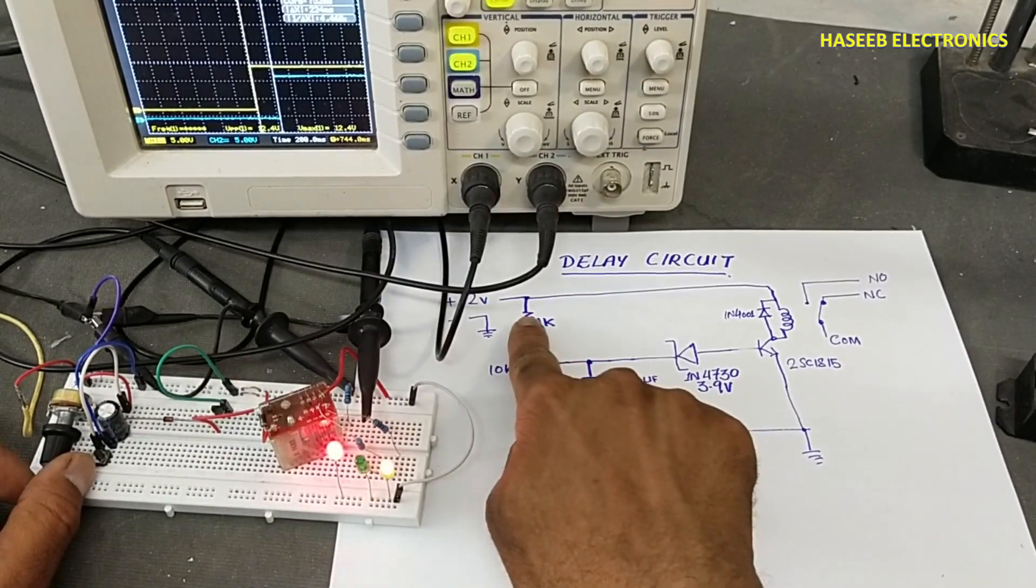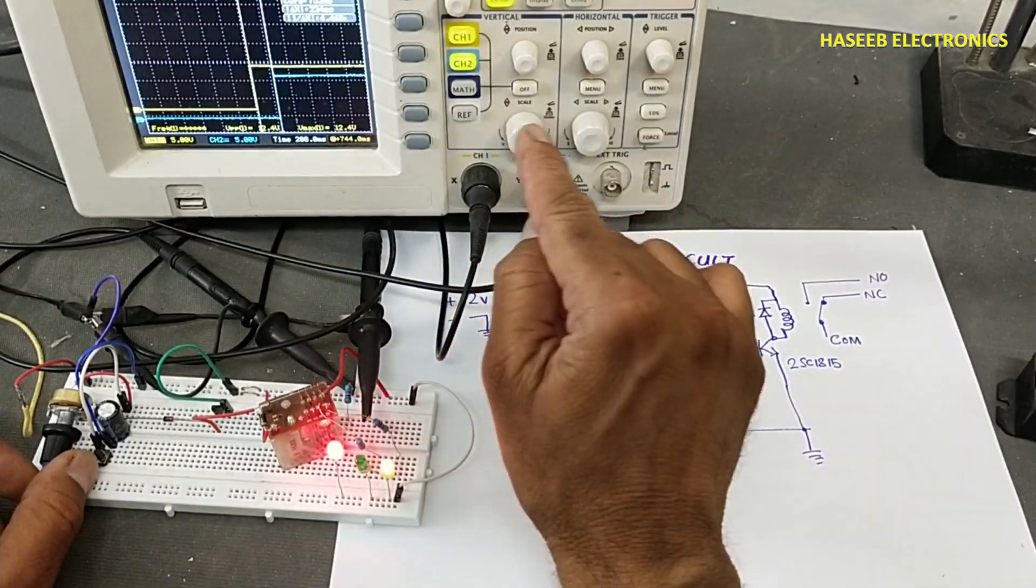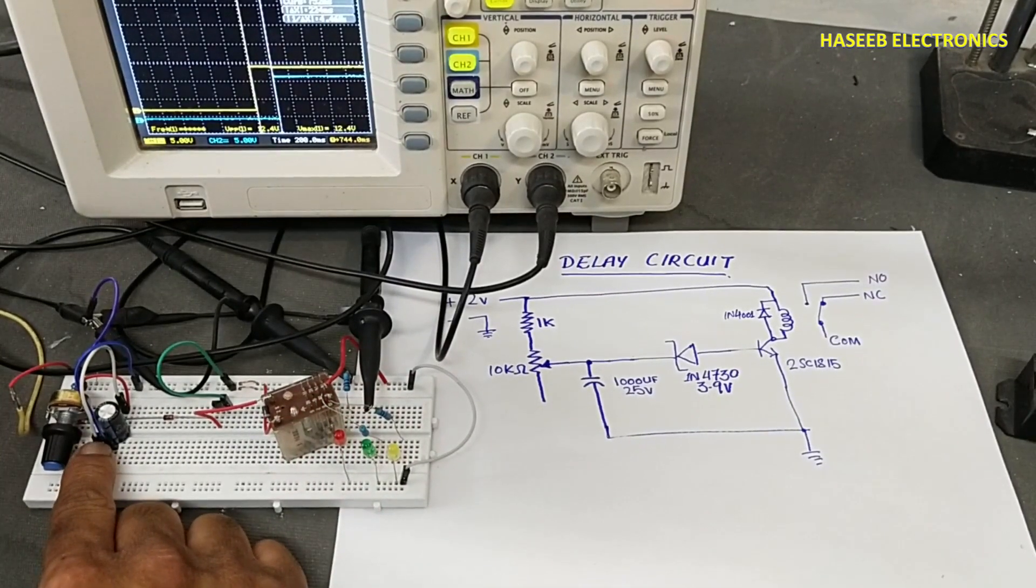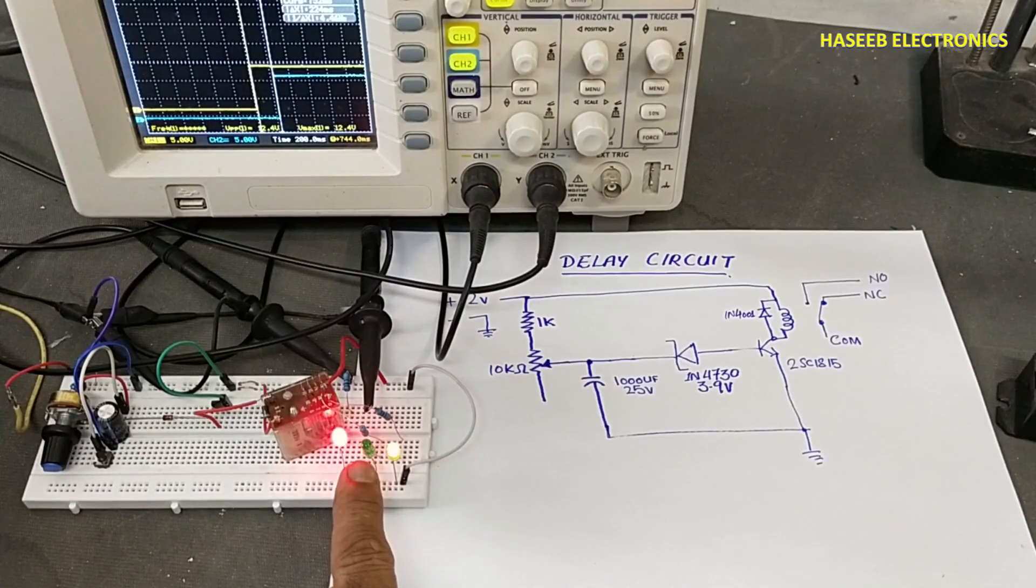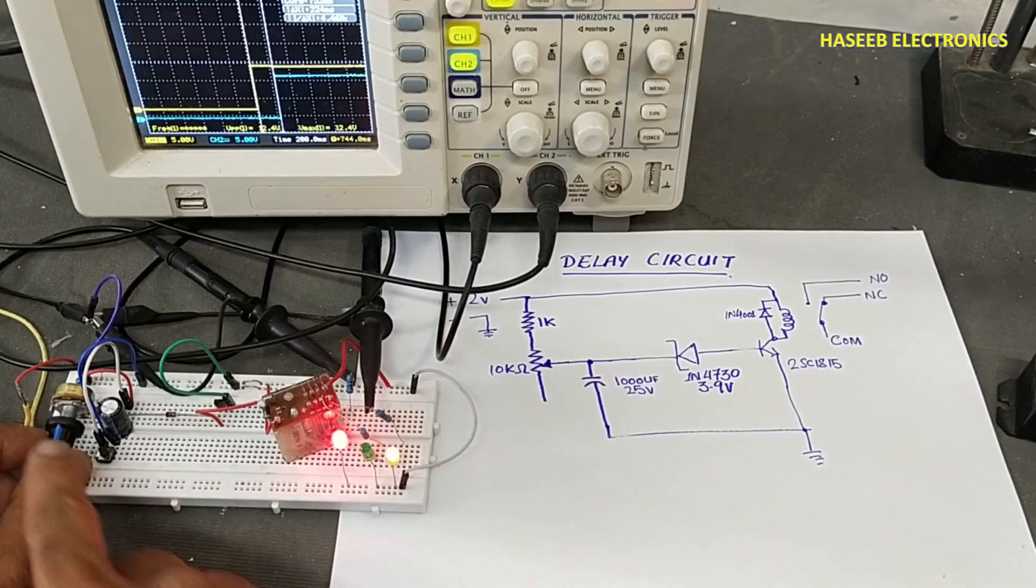Potentiometer to minimum position, using just only one kilo ohm resistance, it is providing 224 milliseconds. You can see now the time difference. It will turn up to two milliseconds.